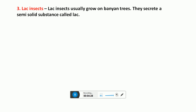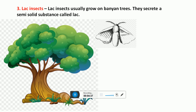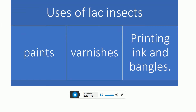Lac insects usually grow on banyan trees. They secrete a semi-solid substance called lac. The uses of lac insects include: paints, varnishes, and printing ink and bangles.